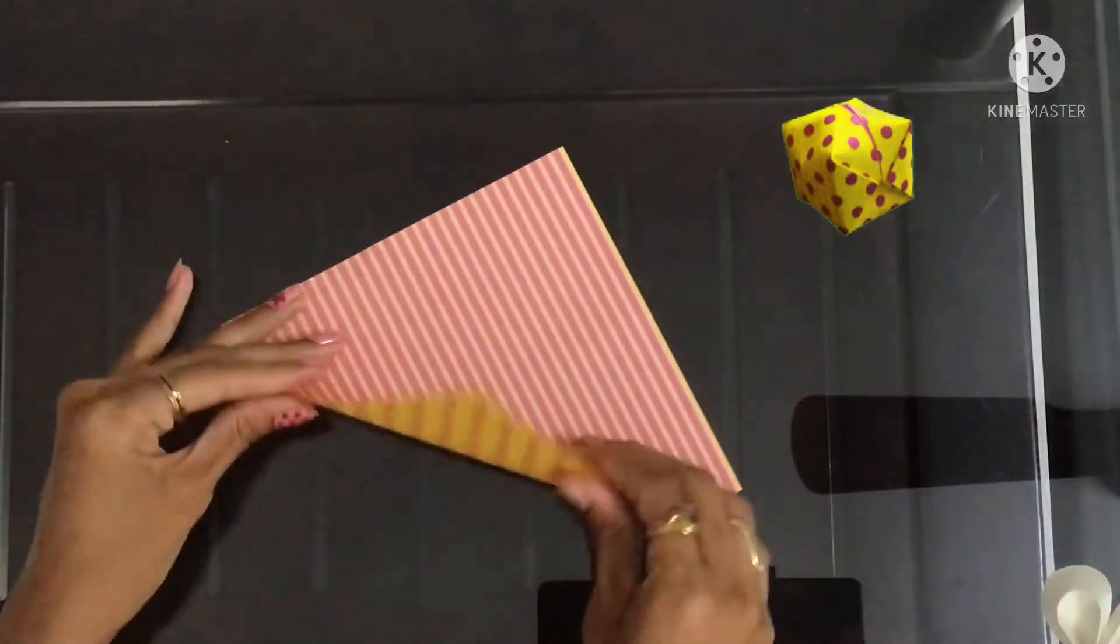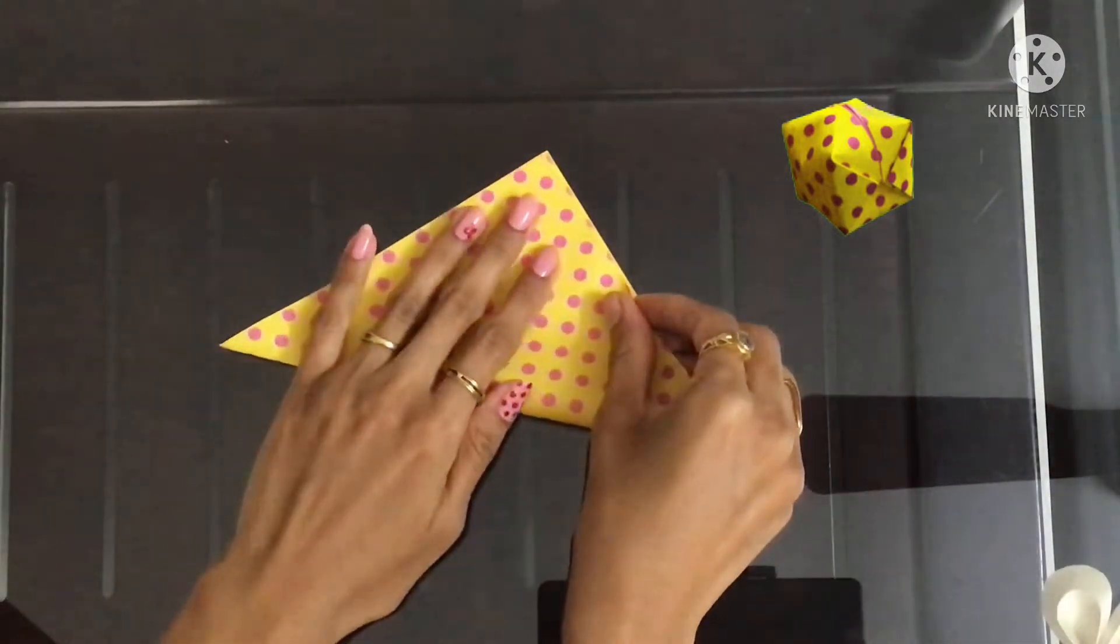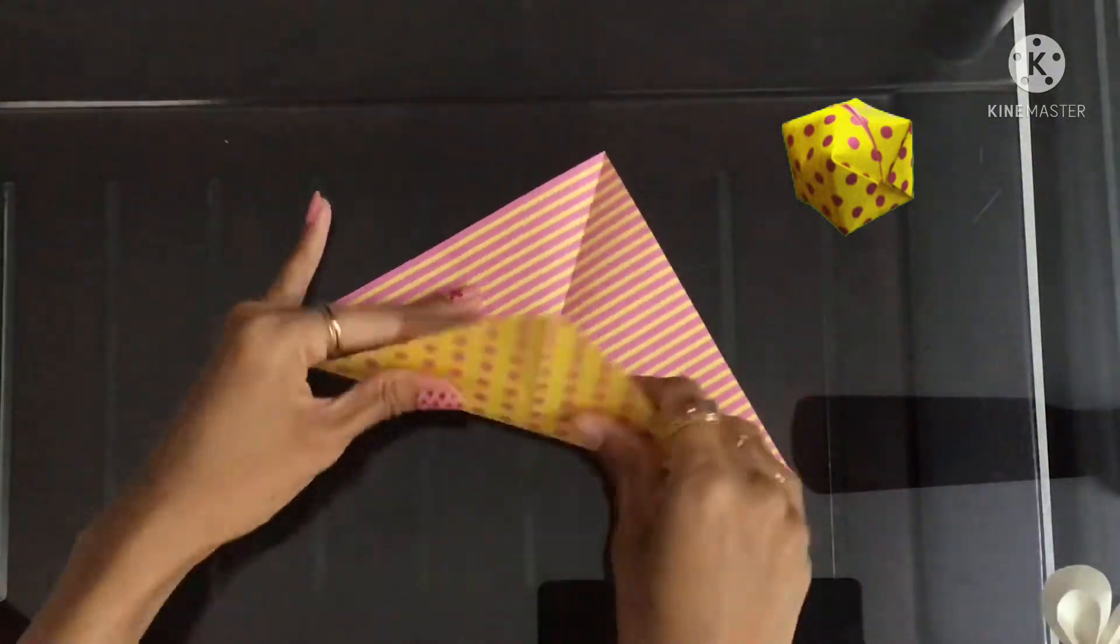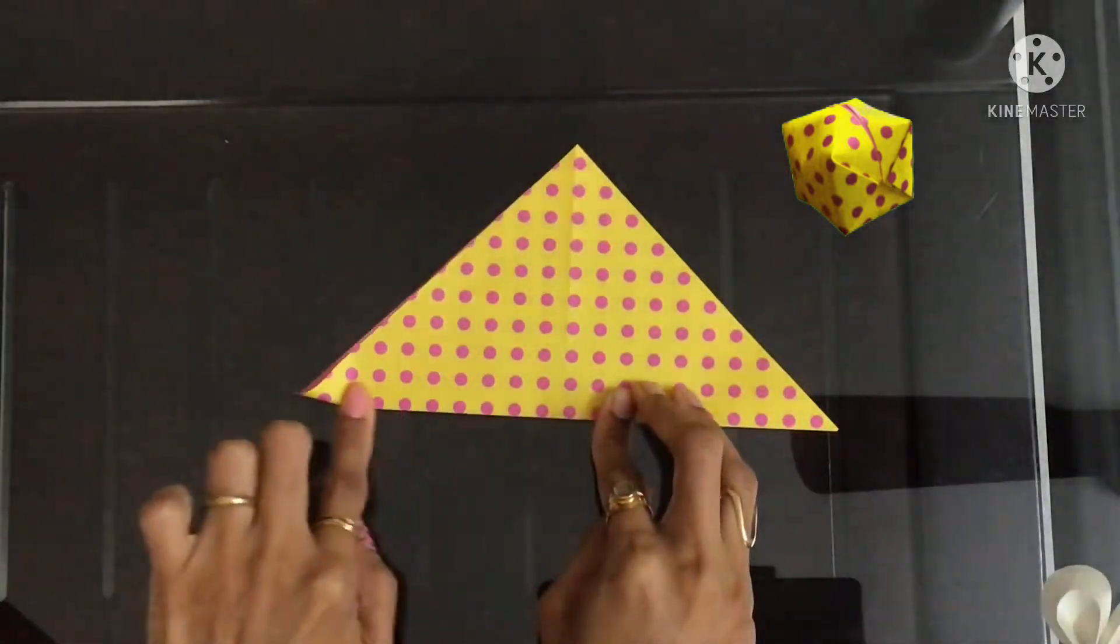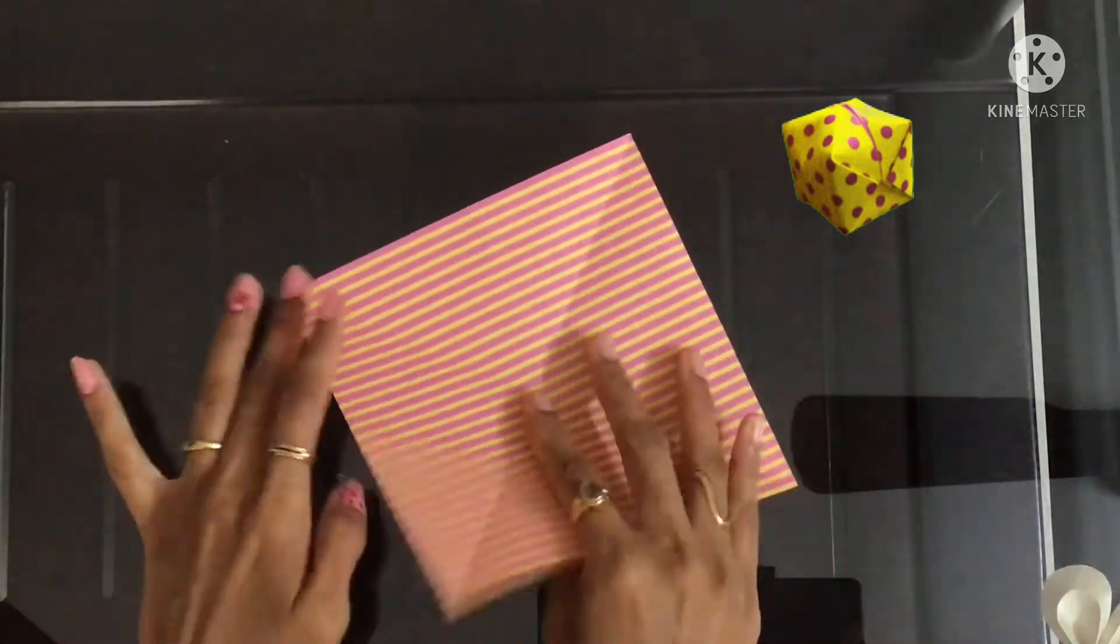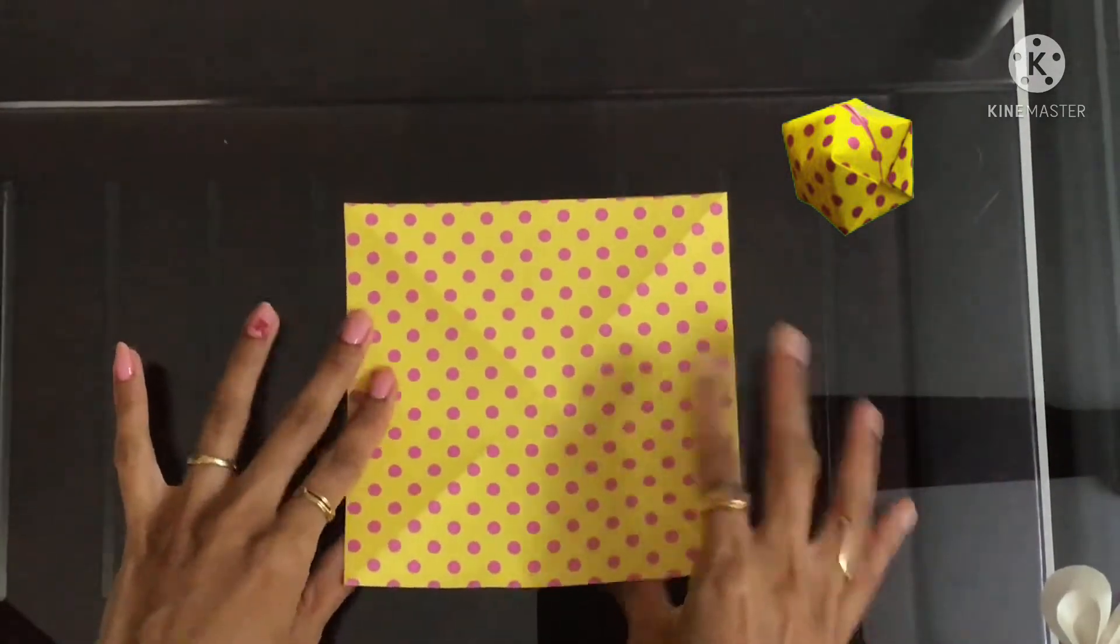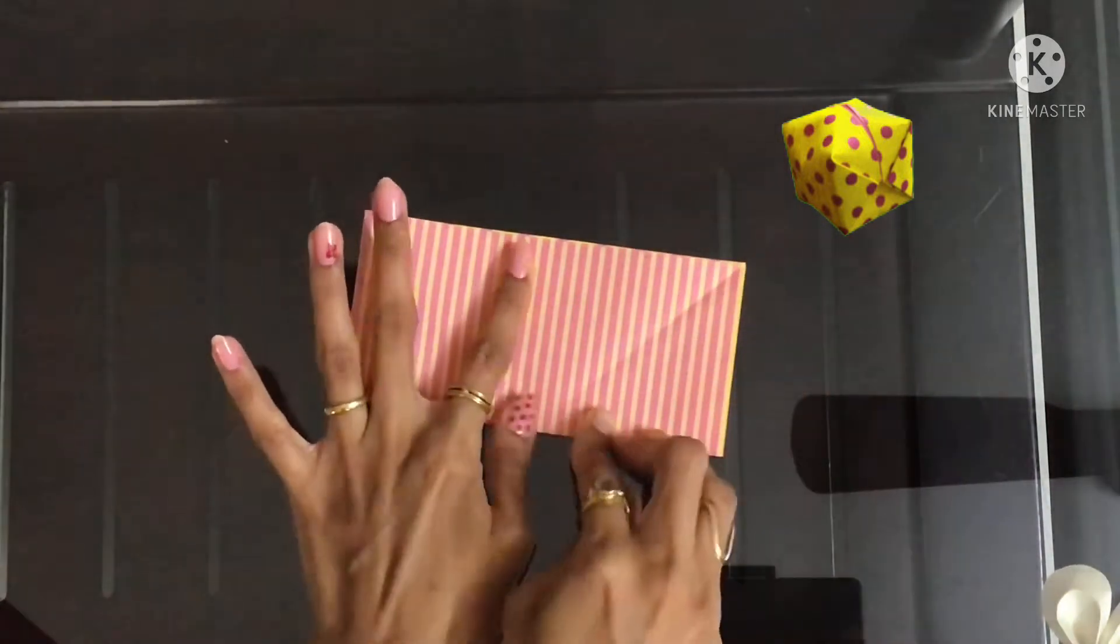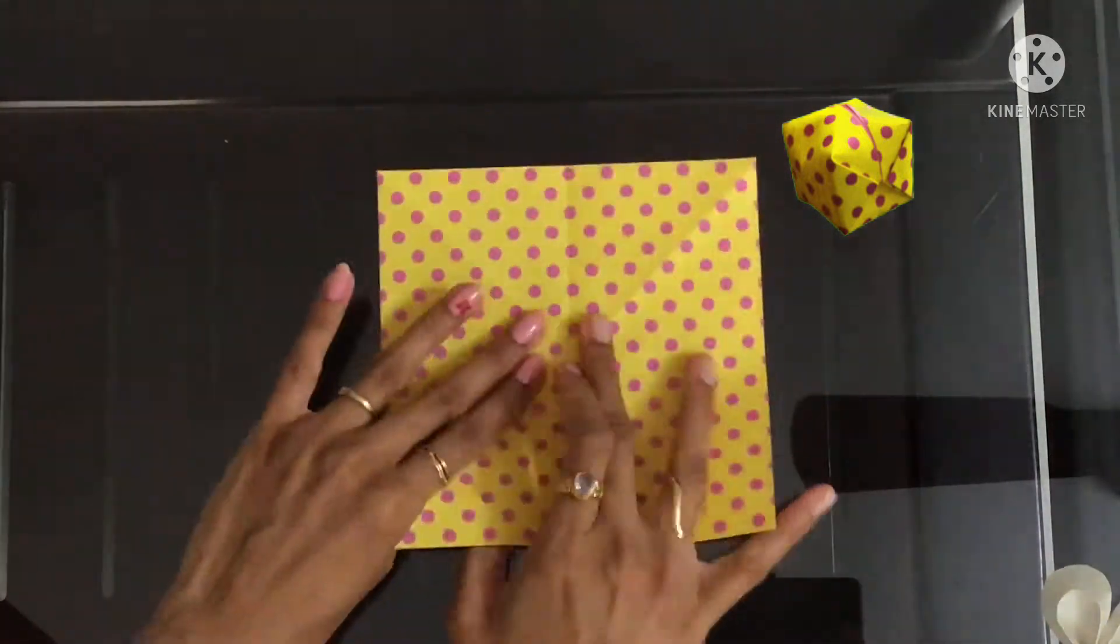Now turn the paper and create a plus crease by folding it in half horizontally and then vertically.